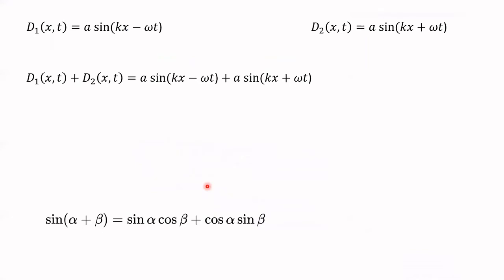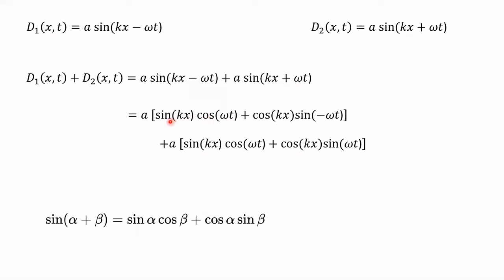Using that identity, in D1 our 'alpha' is kx and 'beta' is negative omega-t. In D2, alpha is kx and beta is omega-t. Applying the trig identity to D1 gives the first two terms, and applying it to D2 gives the terms below. What can we do with the negative omega-t? Since the cosine function is even, cosine(−ωt) equals cosine(ωt), so we don't need to worry about the minus sign there. However, the sine function is odd, so we put that minus sign out front.